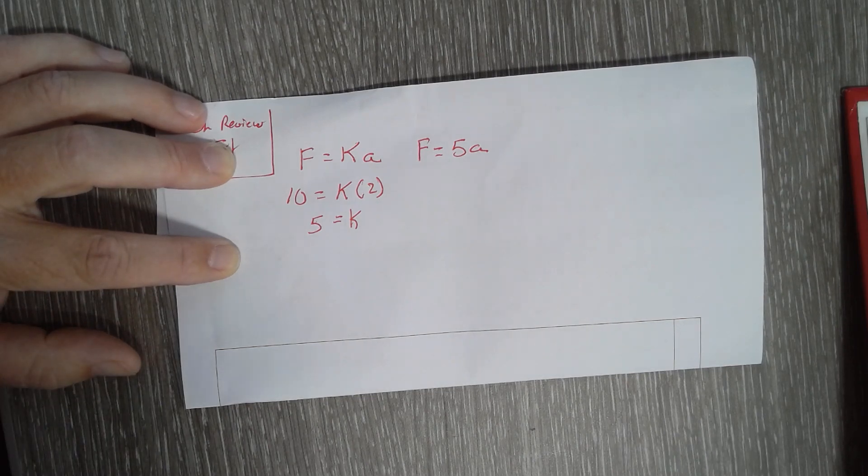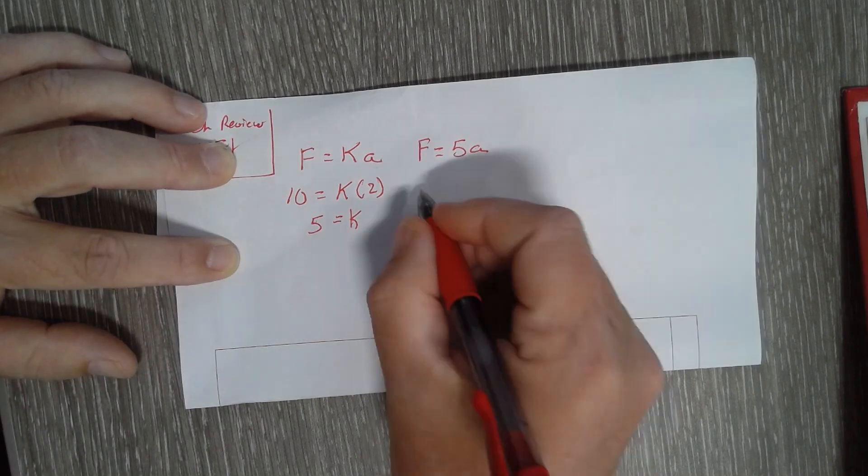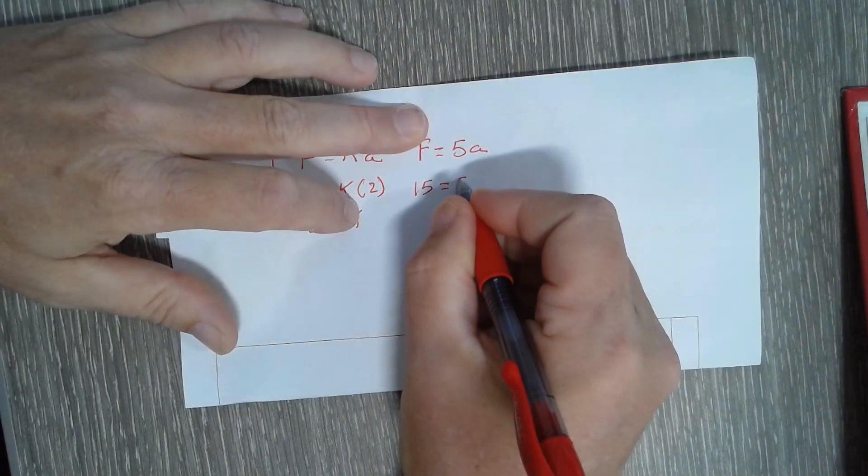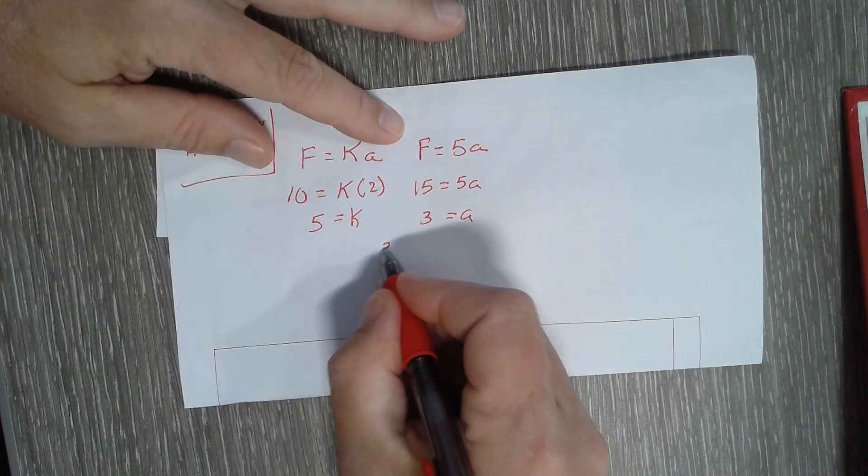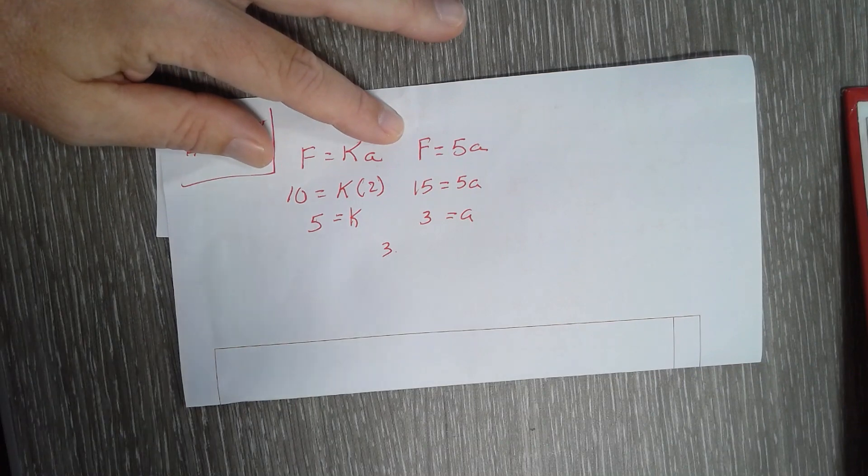Now we plug in what we know. What acceleration will be produced by a 15 pound force? So 15 equals 5a, divide, and you get acceleration of 3 feet per second squared. Yep, that's it.